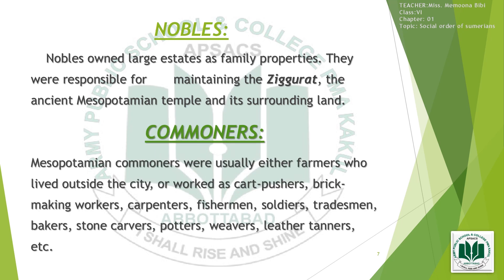Mesopotamian commoners were usually farmers who lived outside the city, or workers such as cart pushers, brick-making workers, carpenters, fishermen, soldiers, tradesmen, bakers, stone carvers, potters, weavers, and leather tanners. All these workers were included in the commoners.